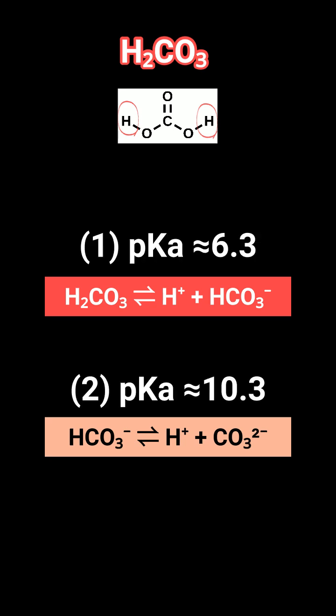The important thing to know is that the first proton dissociates more easily. It's stronger acid behavior, with a pKa around 6.3. The second proton is weaker, harder to remove, with a pKa near 10.3. That means the acid gets less acidic with each proton it loses.